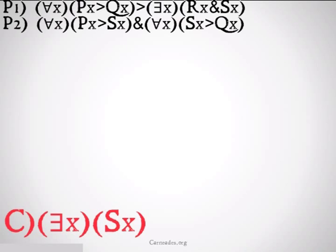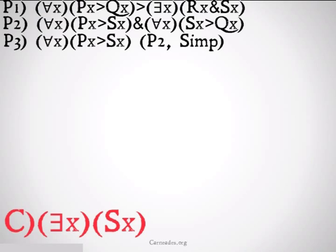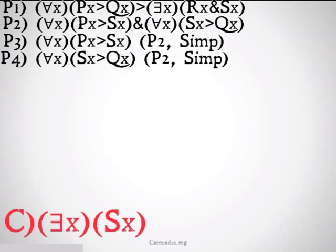Our premises are: for all X, PX implies QX, implies there exists an X such that RX and SX; for all X, PX implies SX; and for all X, SX implies QX. We are trying to prove there exists an X such that X is S. First, I'm going to clean up that conjunction and simplify it out, getting 'for all X, PX implies SX' and 'for all X, SX implies QX' — both from premise two by simplification.